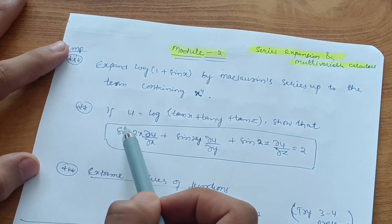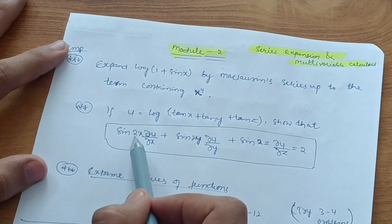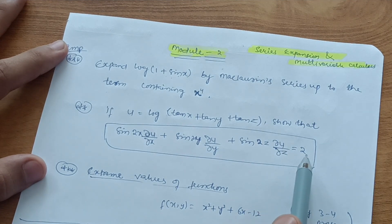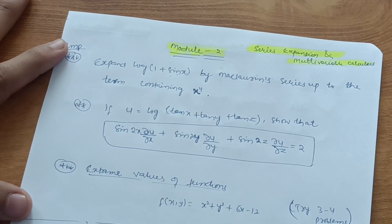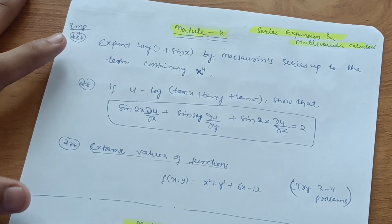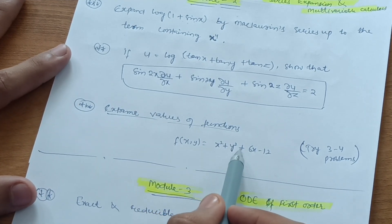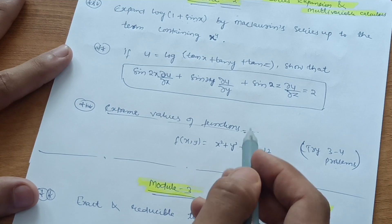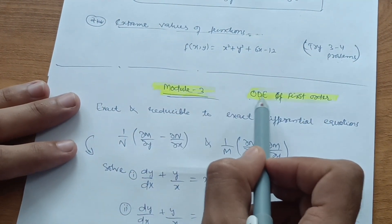Some derivations are important in Module 2. For example: if u = log(tan x + tan y + tan z), show that sin 2x · ∂u/∂x + sin 2y · ∂u/∂y + sin 2z · ∂u/∂z = 2. Try two or three such derivations. Also practice extreme values of functions — for example, find the maxima and minima of f(x, y) = x² + y² + 6x − 12. Try three or four problems for this concept, as it carries seven marks and is based on 12th class concepts.